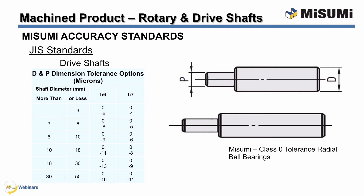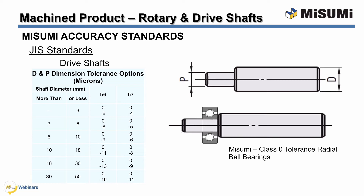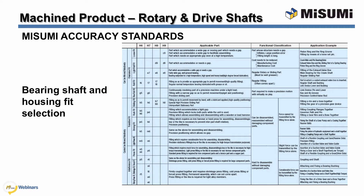These tolerance ranges are a snapshot of the JIS shaft and housing fit tolerance chart found online and in the technical section of the Misumi catalog. These tolerance ranges are important to ensure the proper bearing fit for your application. Notice that the JIS standard is called up by a lowercase letter — the lowercase letter represents a shaft or OD fit tolerance, and the uppercase letter represents the housing or hole tolerance. To assist in your tolerance selection, you can use this chart found online and in the technical section of the catalog. It shows fit characteristics and application examples for guidance on selecting a proper shaft and bearing fit combination.